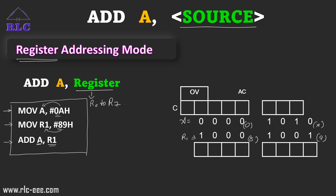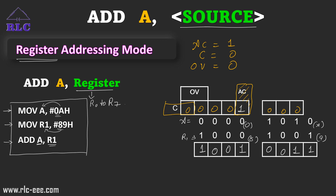Performing the bit-by-bit addition of 0Ah (0000 1010) and 89h (1000 1001): 0+1=1, 1+0=1, 0+0=0, 1+1=0 carry 1, then the remaining bits give us the result. The auxiliary carry bit is set to 1. The carry flag is 0. The overflow flag is also 0 — it is the XOR of C7 and C8. The parity flag is 0 because there are four 1s in the accumulator.